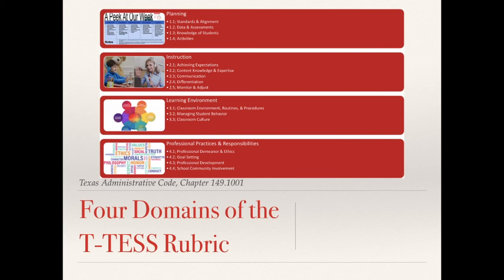The instruction domain includes sections on achieving expectations, content knowledge and expertise, communication, differentiation, and monitoring and adjusting. The learning environment domain contains three sections: classroom environment routines and procedures, managing student behavior, and classroom culture. The professional practices and responsibilities domain includes sections on professional demeanor and ethics, goal setting, professional development, and school community involvement.